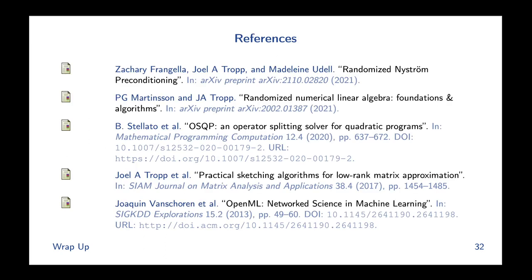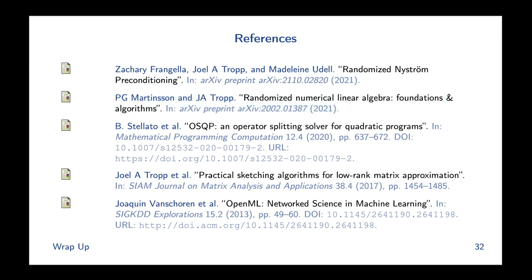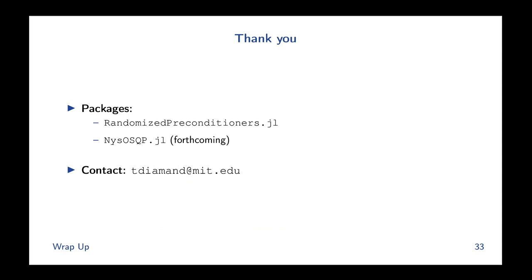Here are the references mentioned, including Zach's paper on randomized Nystrom preconditioning and the survey on randomized numerical linear algebra. Thank you — please check out randomizedpreconditioners.jl and the forthcoming NICE-OSQP.jl, and don't hesitate to reach out via email.